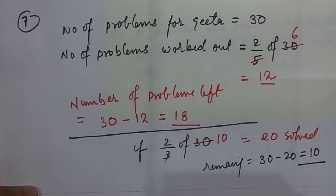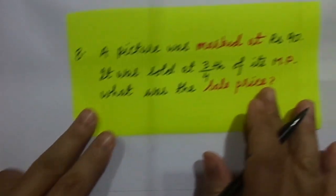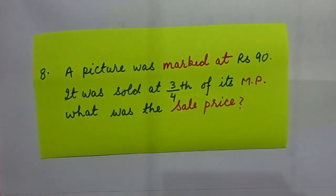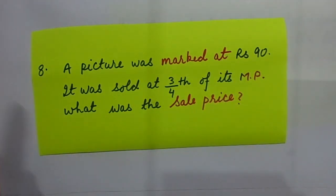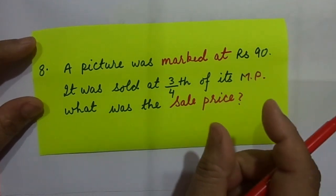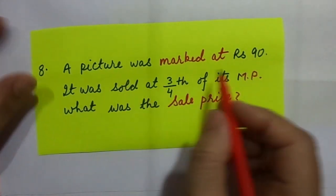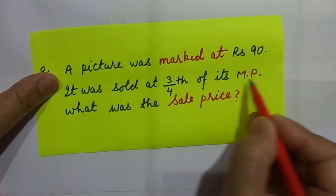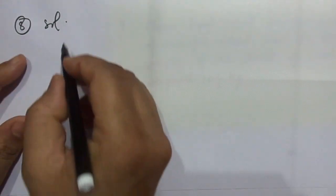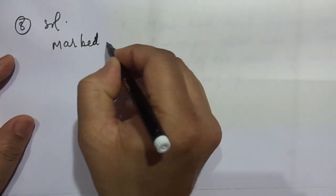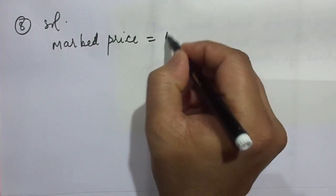A picture was marked at — marked at — what is this marked at? When you come across words like marked at, or advertised at, listed at, this means they are the marked price. If you buy any article, you will find MRP — maximum retail price — which the shopkeeper will not sell above. So, a picture was marked at rupees ninety, sold at three by fourth of its marked price. I said the presentation matters.